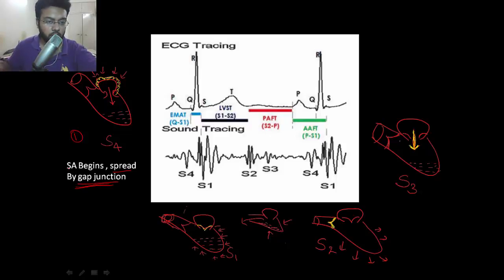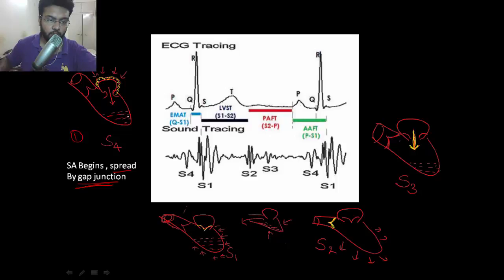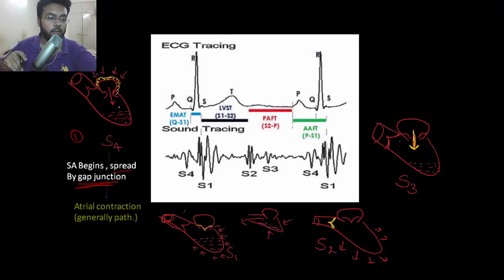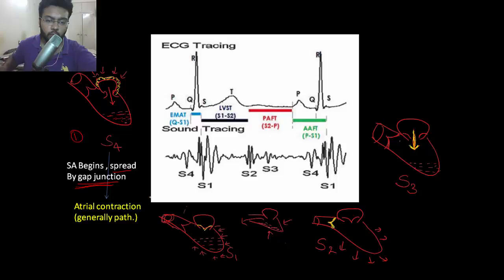The cardiac cycle begins with atrial contraction, after which there is active filling of the ventricle. Sometimes this may produce the fourth heart sound, which is pathological — not normal. The fourth heart sound due to atrial contraction is pathological.